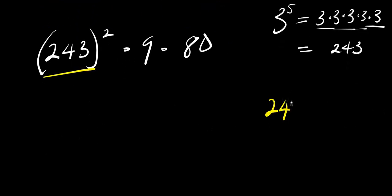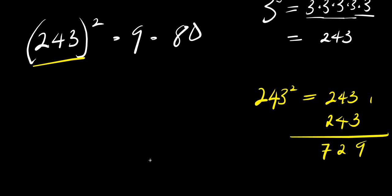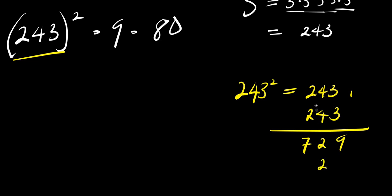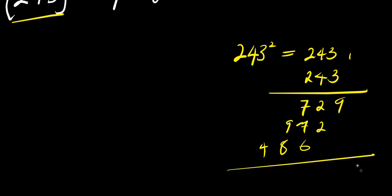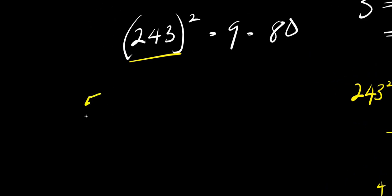Now we need to compute two hundred and forty-three squared. Two hundred and forty-three times two hundred and forty-three, working through the long multiplication, gives us fifty-nine thousand, four hundred and forty-nine. So we now have fifty-nine thousand four hundred and forty-nine, times nine, times eighty.